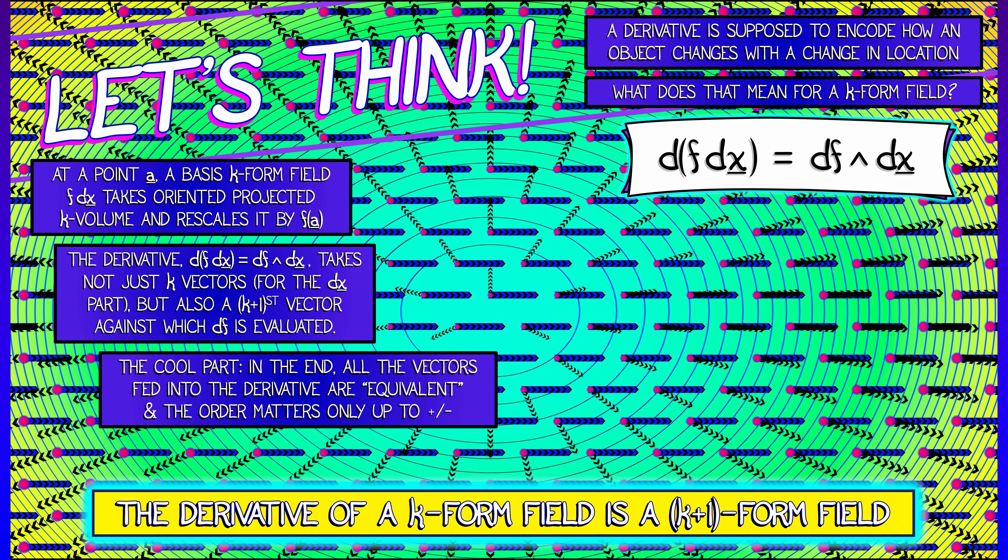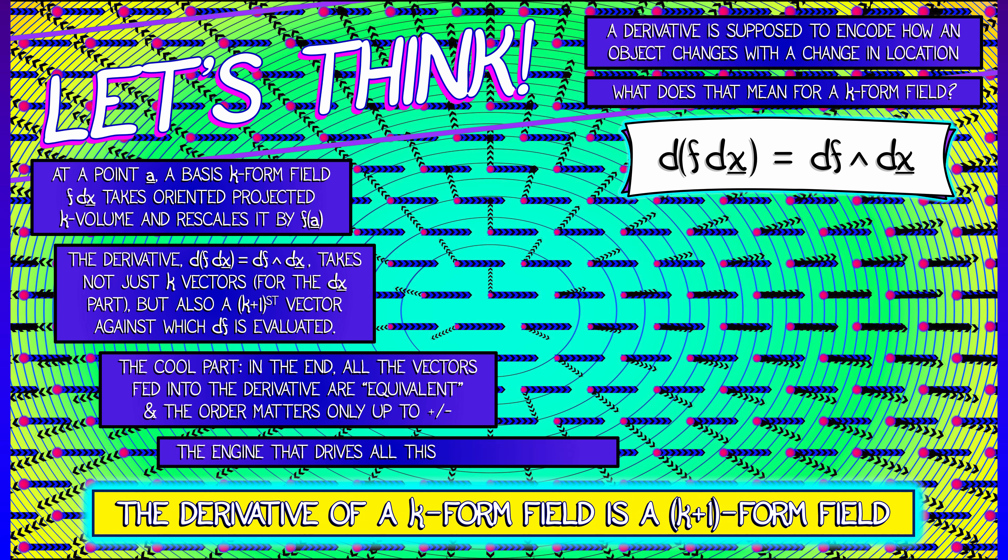But the cool part is, in the end, all the different vectors that you feed into this derivative k plus one-form field are really equivalent. You can swap them. The order only matters up to a plus or a minus. And what makes that property the case, what makes the differentiation operator so special, is the determinant. Understanding determinants is really the key to understanding so many things, including the exterior derivative.